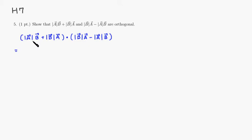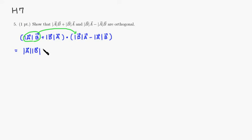I'm going to distribute the first term to the first factor. These magnitudes are just scalar values, so I'll put them in front: magnitude of A times magnitude of B. Then you multiply vector B dot with vector A. Then we distribute to the second factor — it's going to be negative, so minus.